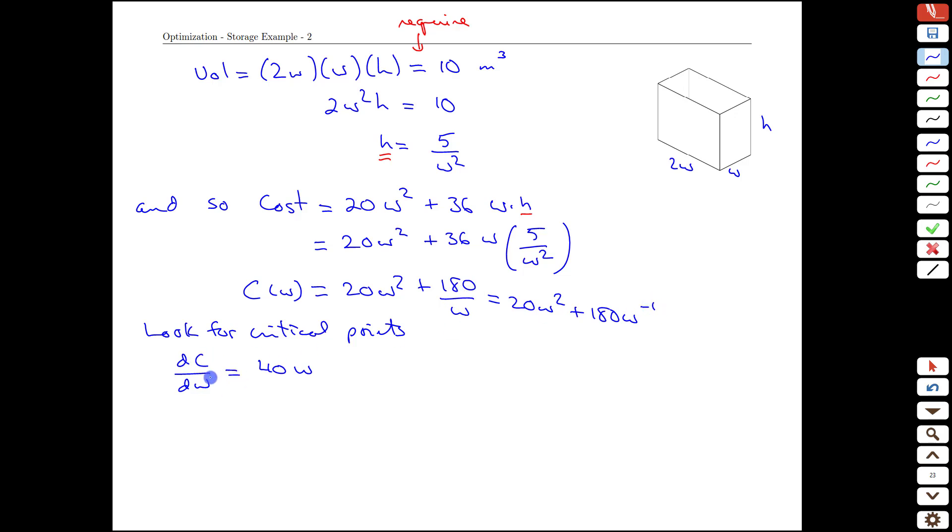This is the same function. We haven't taken the derivative yet. We've just rewritten the second term. Then when we go to take the derivative, we bring the power down front and we get negative 180w to the negative 2. And that we can rewrite in a more traditional format of 180 over w squared. Perfect. So that's the derivative.